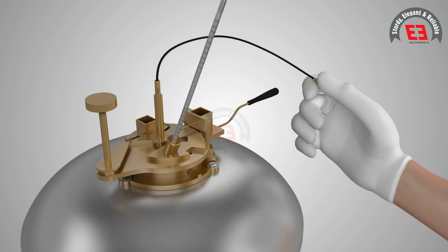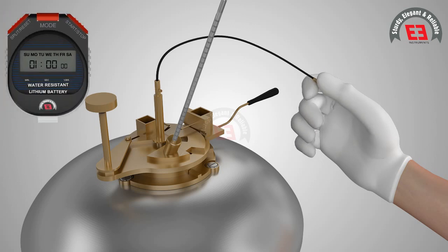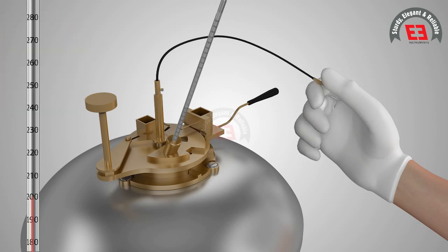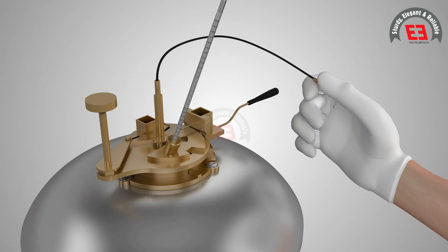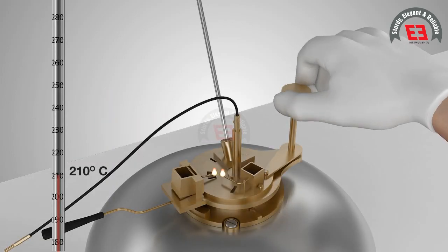The stirring is done at a rate of approximately 60 revolutions per minute. When the specimen attains a temperature of about 17 degrees Celsius below the expected flash point, the stirring is discontinued and the test flame is applied on the sample.